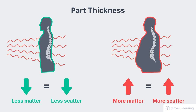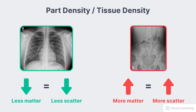The same idea applies to part density or tissue density — this refers to the amount of matter packed into the space of the tissue. For example, the chest is mostly full of air, which is lower density, meaning there's less matter and less scatter. The abdomen, though approximately the same thickness, is more dense. This means there's more matter, more scatter, and the overall image is going to be lower contrast.